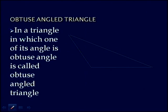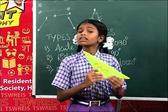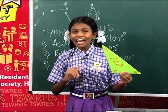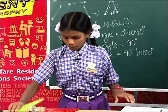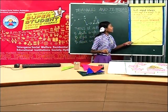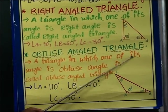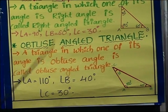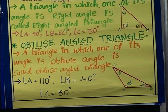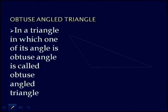And now, obtuse angled triangle. In a triangle in which one of its angles is an obtuse angle, it is called an obtuse angled triangle. See on the screen. This is the picture of an obtuse angled triangle.